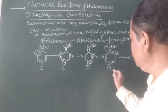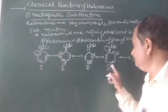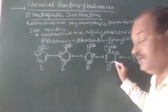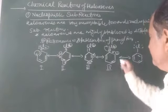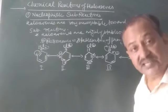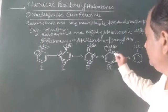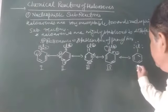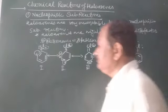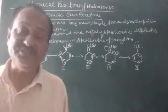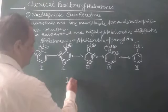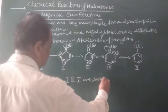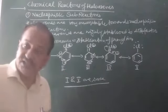In the fourth resonance structure, the negative charge is between carbons 4 and 5, and it shifts further to carbons 5 and 6, ultimately shifting back to the chlorine. Out of the five resonance structures, structures 1 and 5 are the same. Structures 2, 3, and 4 show positive charge on the ring carbons and on the halogen.